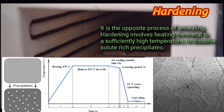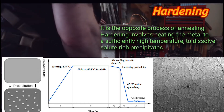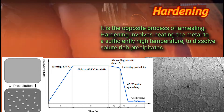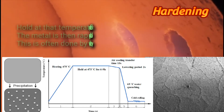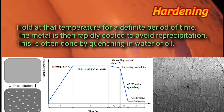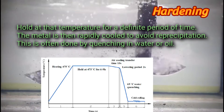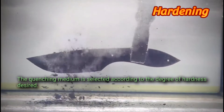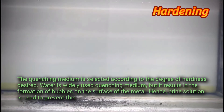Hardening is the opposite process of annealing. Hardening involves heating the metal to a sufficiently high temperature to dissolve solute-rich precipitates, holding at that temperature for a definite period of time. The metal is then rapidly cooled to avoid re-precipitation, often done by quenching in water or oil. The quenching medium is selected according to the degree of hardness desired.